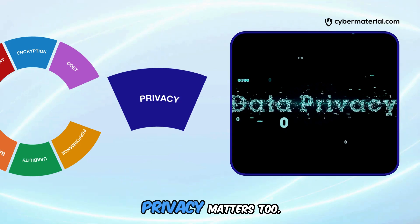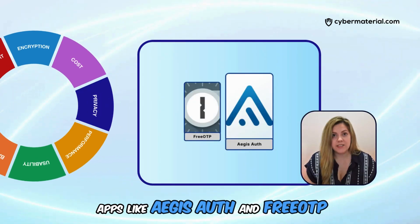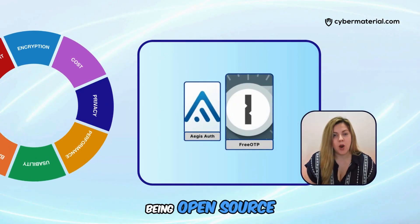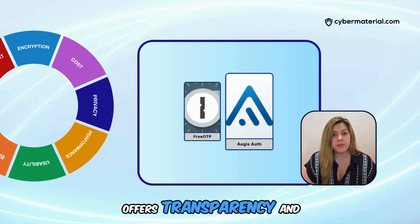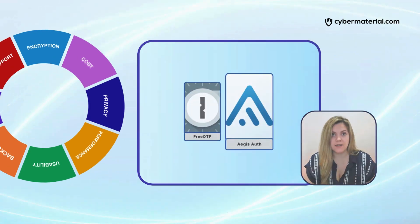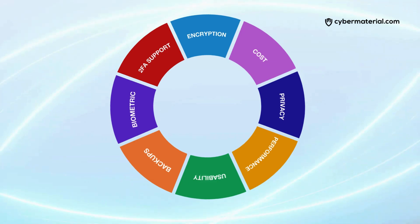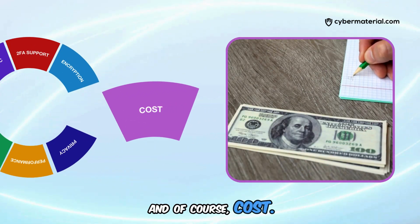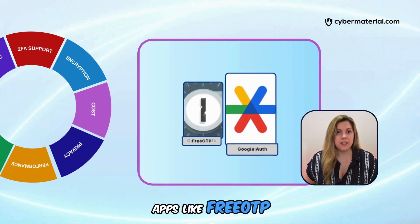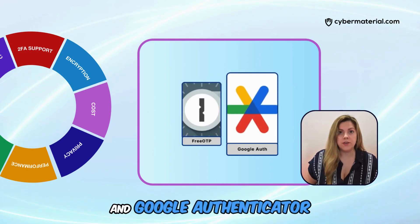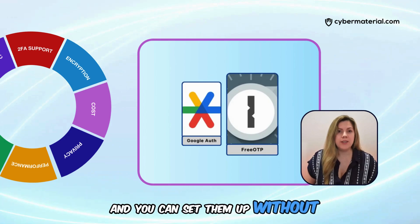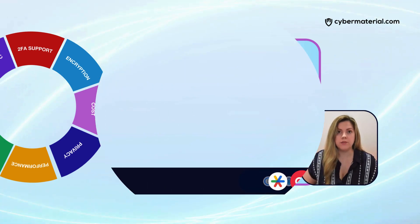Privacy matters too. Apps like Aegis Authenticator and FreeOTP, being open-source, offer transparency and control over your data. And of course, cost — apps like FreeOTP and Google Authenticator are completely free, and you can set them up without creating an account.